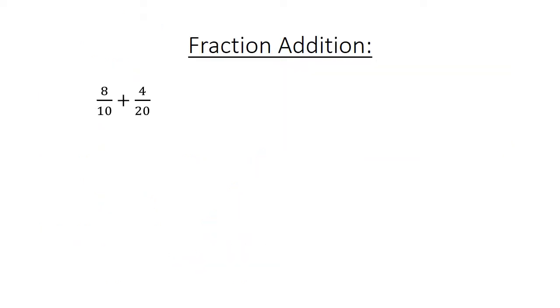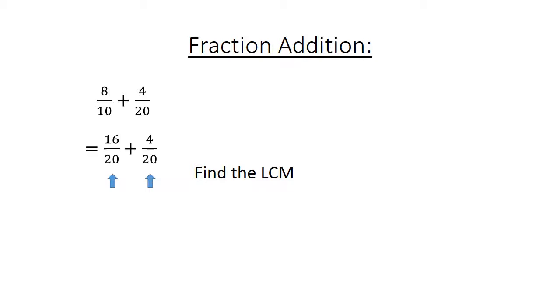Fraction addition. 8 over 10 plus 4 over 20. Find the lowest common multiple: 20. 16 over 20 plus 4 over 20 equals 20 over 20 equals 1.